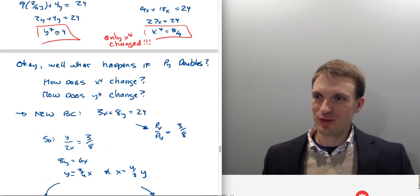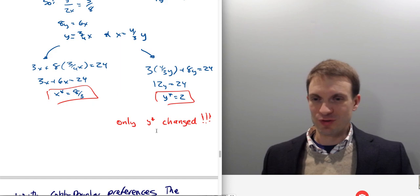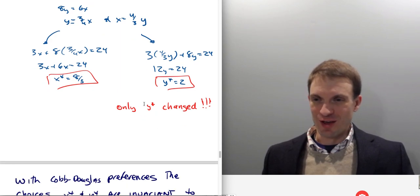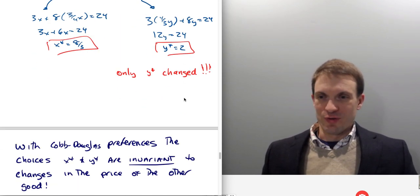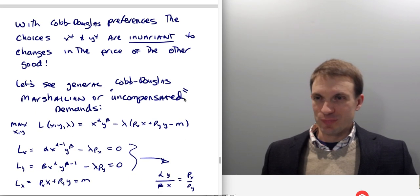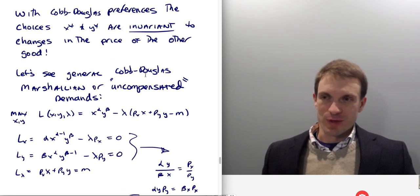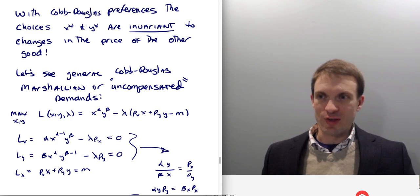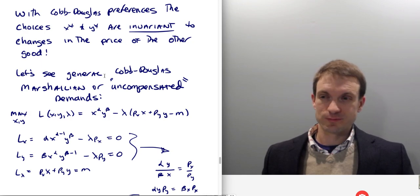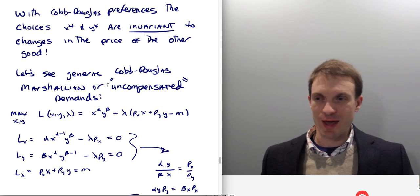That shouldn't distract me, but it does. So we found only Y has changed. So now I want to point something out. With Cobb-Douglas preferences, the choices X star and Y star are invariant to the changes in the prices of the other good. We can get this from our generic Cobb-Douglas demands.